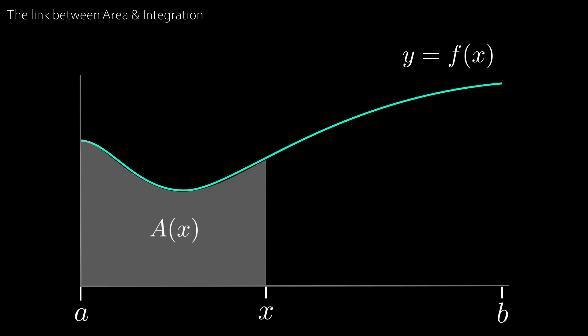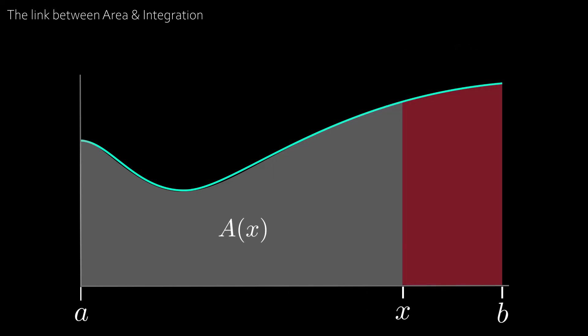Let's now say that we want to find the area of this red section here between x and b. Then we can say that this section is equal to the area from a up to b minus the area from a up to x. Which is the same as capital A of b minus capital A of x.